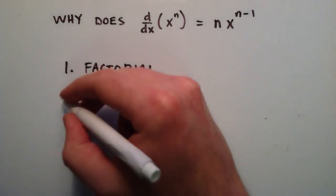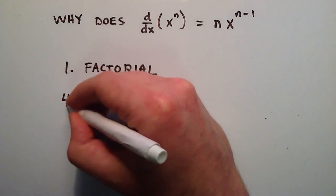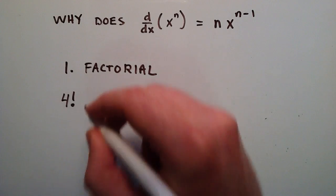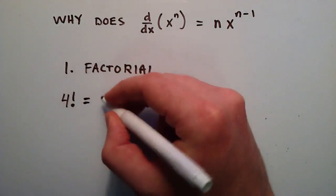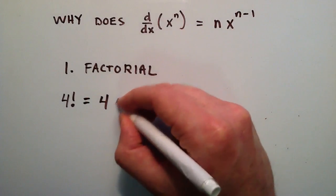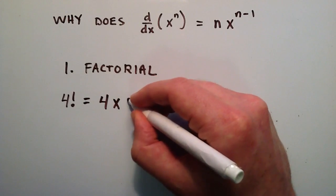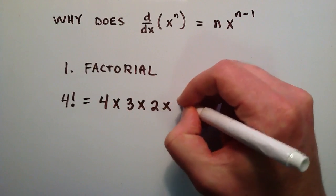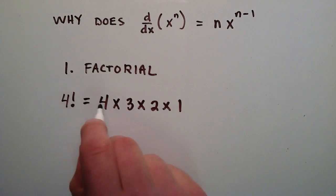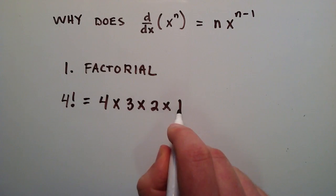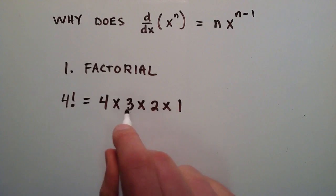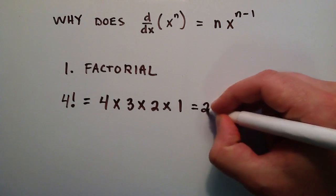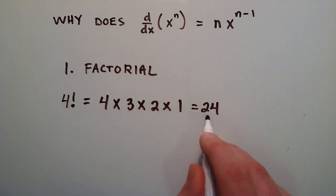And basically all a factorial is, if we had for instance, 4 factorial, it's just 4 with an exclamation point. And so that simply means that you just start with the number. So in this case, it's 4. And you just multiply it by 1 less than 4, and then 1 less than that number, and then all the way down to 1. So basically 4 factorial is 4 times 3 times 2 times 1. So 4 times 3 is 12. 12 times 2 is 24. And then 24 times 1 is still 24. So 4 factorial is equal to 24.